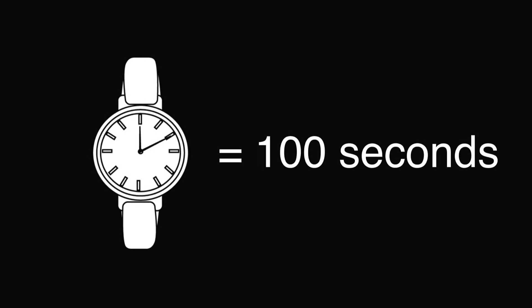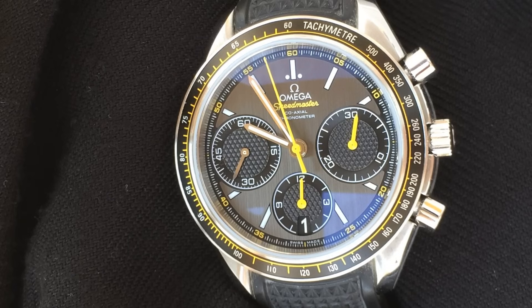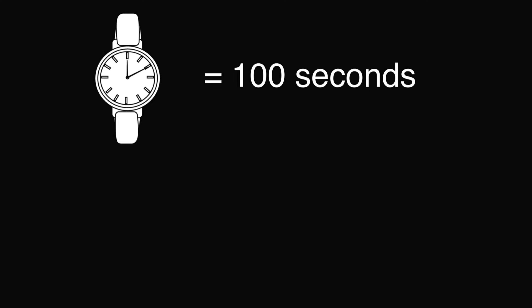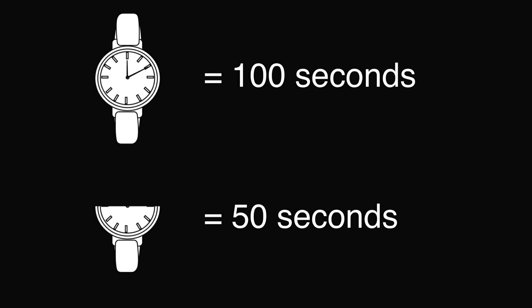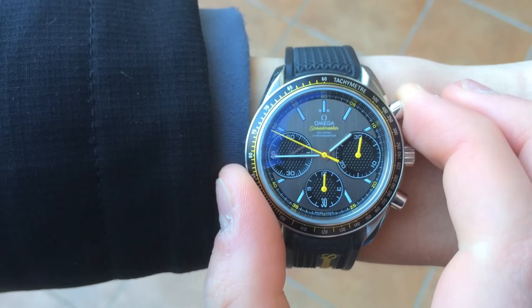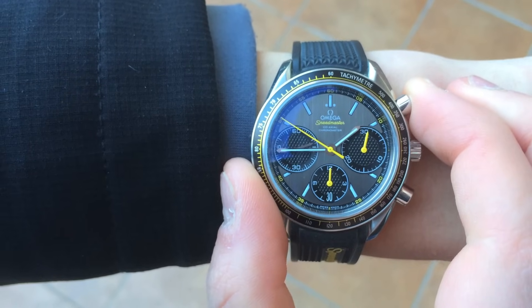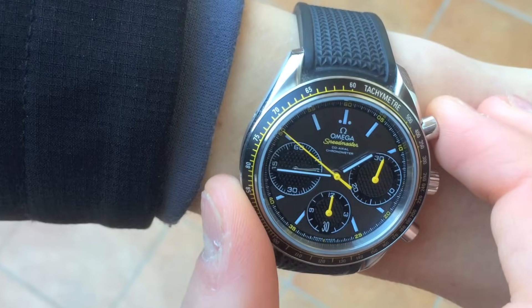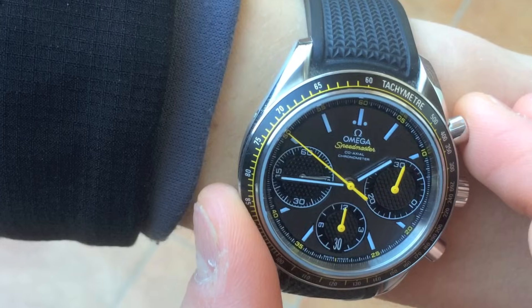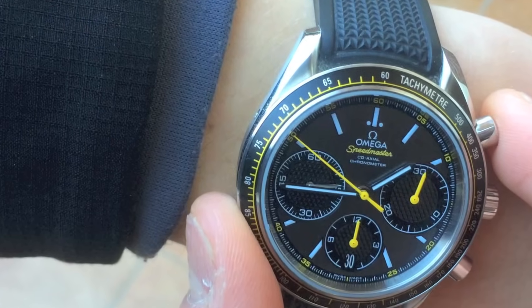Now let's say you're visiting a luxury watch manufacturer. Observing the assembly line, you notice the manufacturer produces one watch every 100 seconds. You can still use the tachymeter scale even if this time is above 60 seconds. If the manufacturer produces one watch every 100 seconds, this is the same as half a watch per 50 seconds. 50 seconds is within the valid range of the tachymeter scale, and as a result, you can calculate that 72 half watches, or 36 whole watches, are completed on average in one hour.